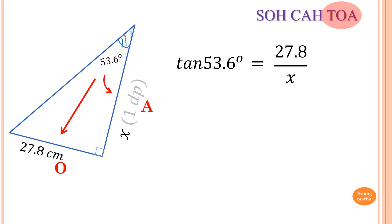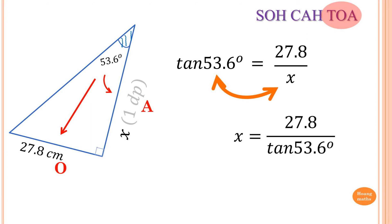Again, using the shortcut: X is down at the bottom, so we just swap tan with X. So X is equal to 27.8 over tan of 53.6 degrees. Put that in the calculator and you should get 20.5 centimeters.